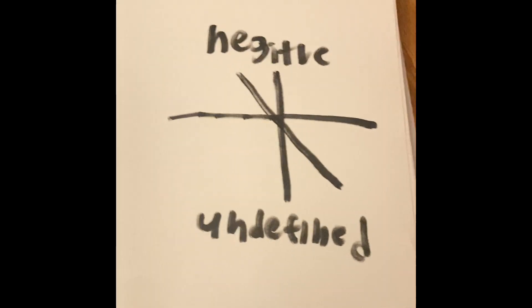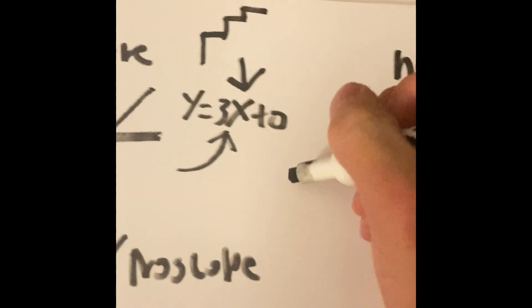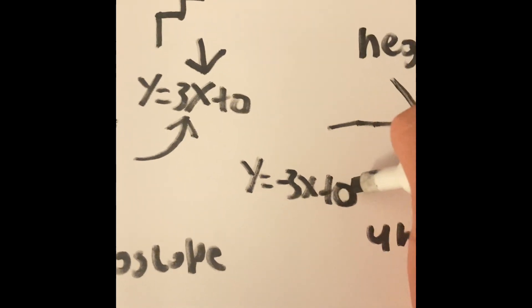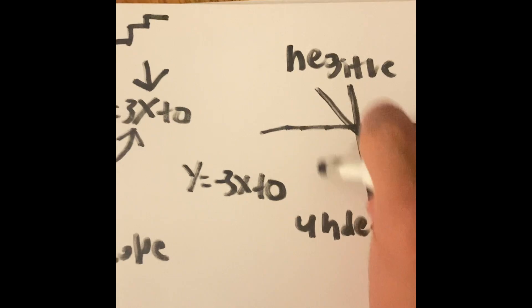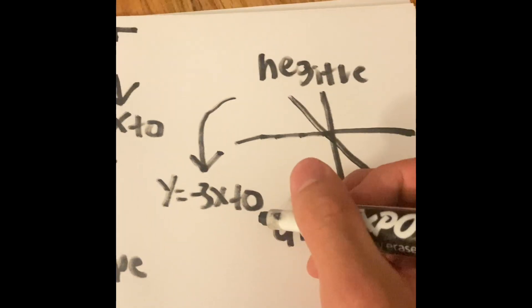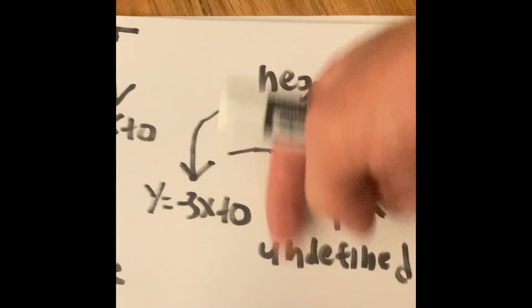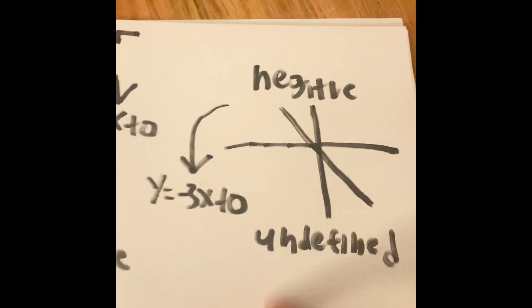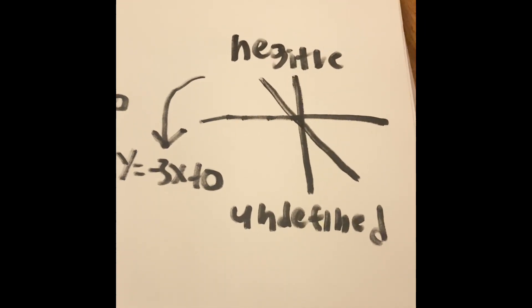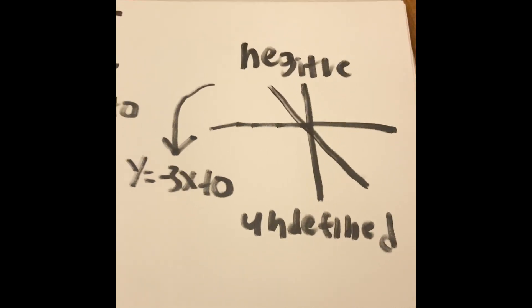So for the equation, instead of putting y equals 3x, I'm gonna say y equals negative 3x plus zero. So a negative slope happens when the coefficient of your variable or your slope is a negative number, causing the line to decrease. So you would go down then go right, down right, like you're going downstairs. So this is an example of a negative slope.